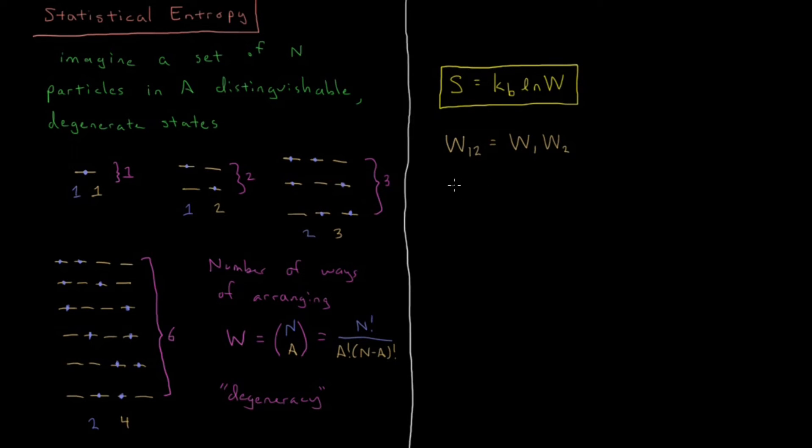So what entropy do we get when we have this composite degeneracy factor? So that's going to be kB log W12, which is equal to kB log W1 times W2.